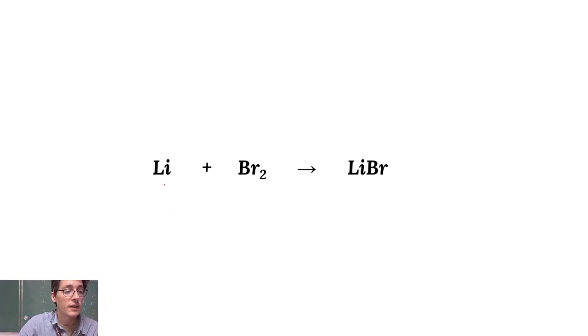So to balance it, I've got one lithium in my reactants, one in my products, two bromines in the reactants, one in the product. So I know I have to double that. And then looking back across, now I have two lithiums, so I need to come across and double that. So now I have a balanced chemical equation.